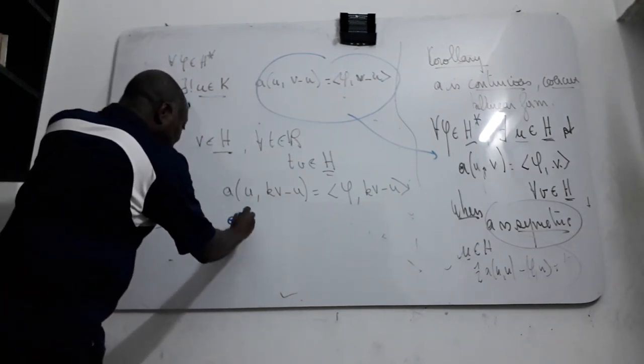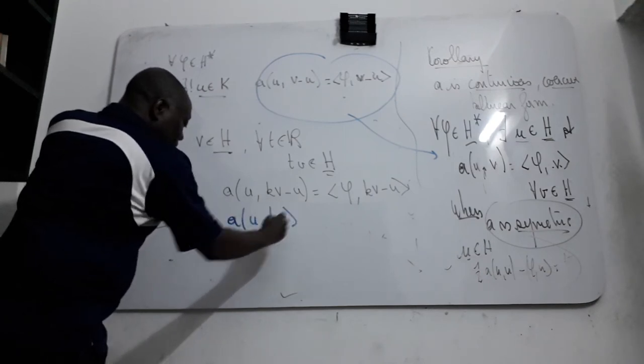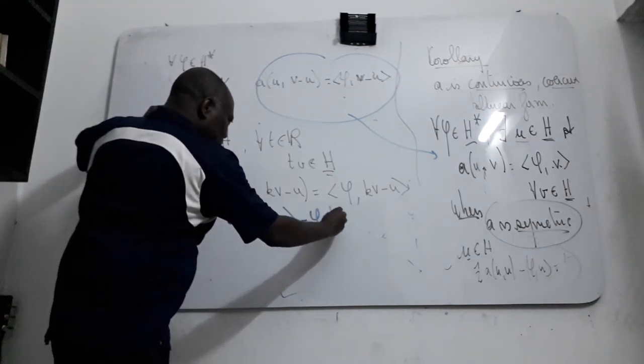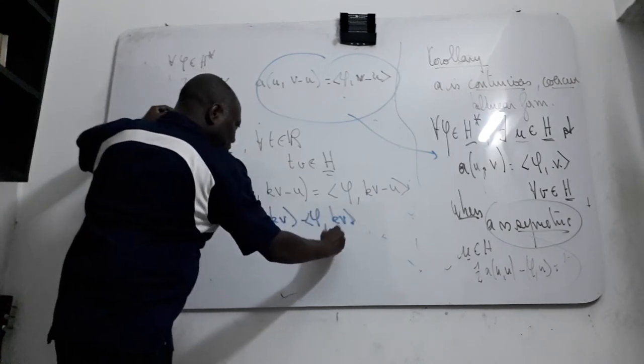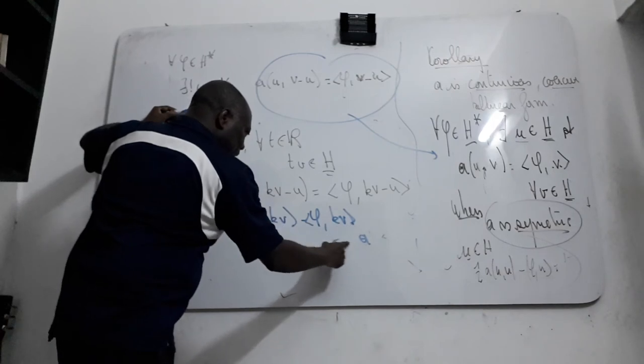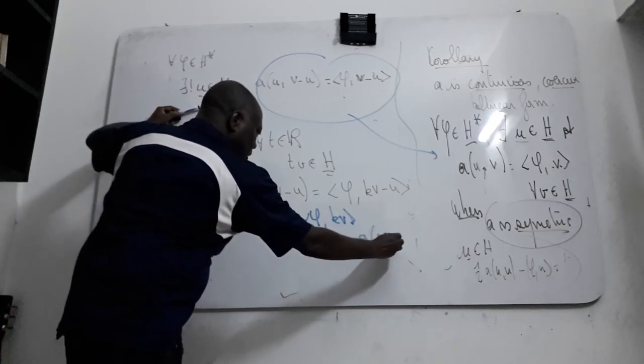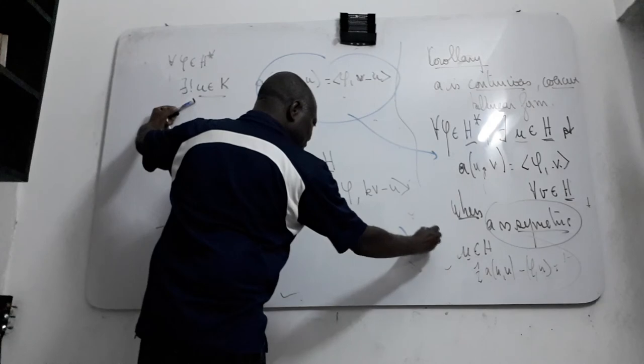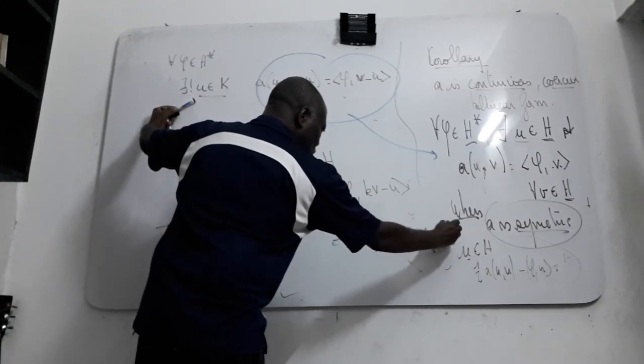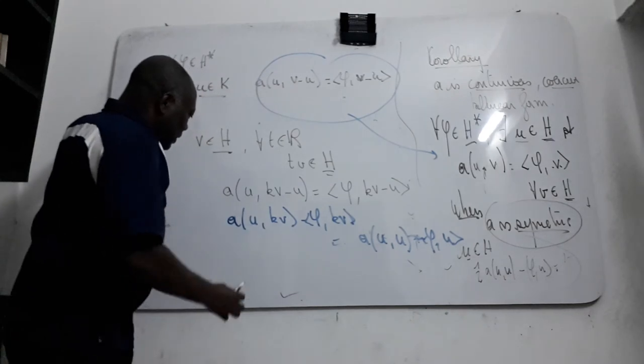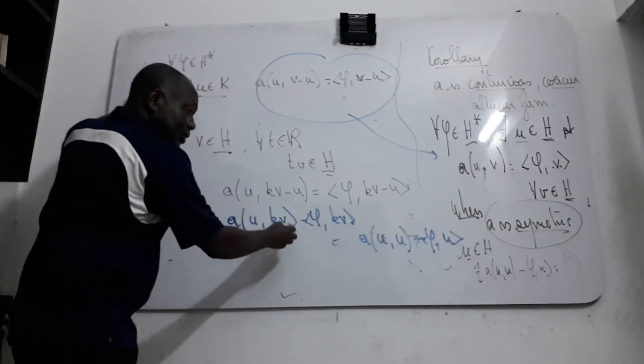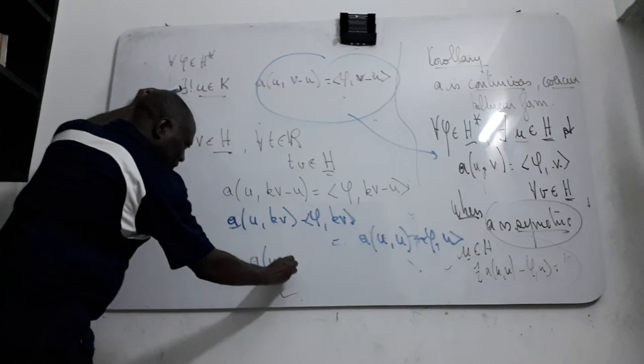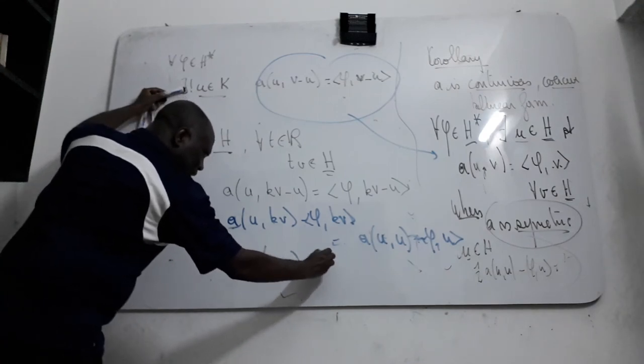So this one I can get A U T V minus phi T V. This must be equal to A U U like this. And the same form which you get there, plus minus phi U. You get this form. And this one is linear also. You can put out T here. I can put out T here. Then from here you will have A U V minus phi V like this.